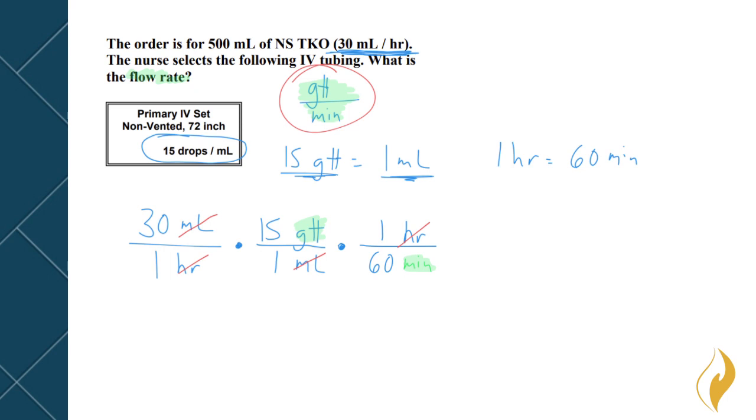So we know we've done the correct conversions. Now we just need to figure out what does this equal when we're done. So we multiply across the top: 30 times 15 times one is 450. On the bottom, I have one times one times 60.